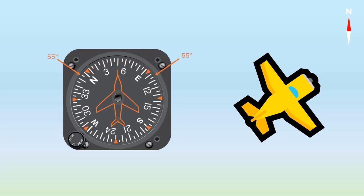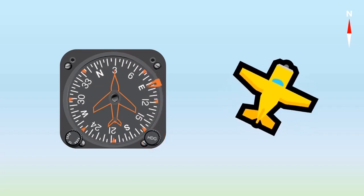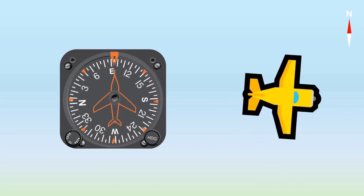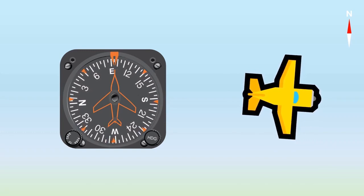Some heading indicators come with a handy heading bug to make things even simpler. You can adjust the heading bug using the knob at the bottom. This allows you to mark your intended heading before making a turn. Then, all you have to do is line up the symbolic airplane with the heading bug. The heading bug also helps pilots spot any small deviations from the desired heading more easily, so they can make corrections right on time. Together with the relative bearing markers, a 55-degree left turn would be just a piece of cake.